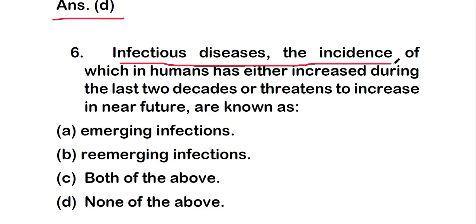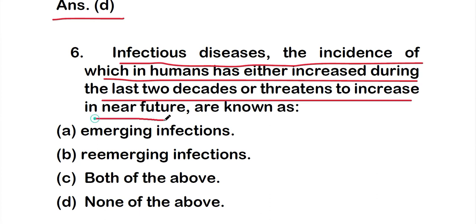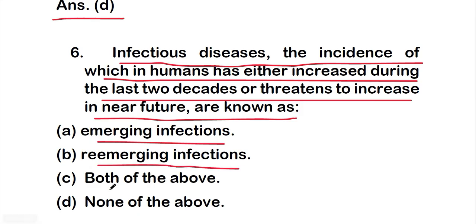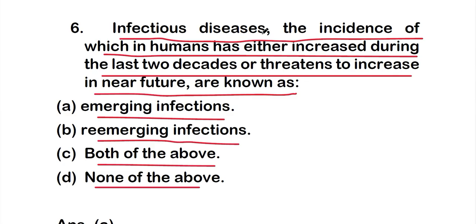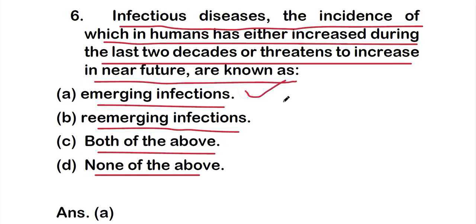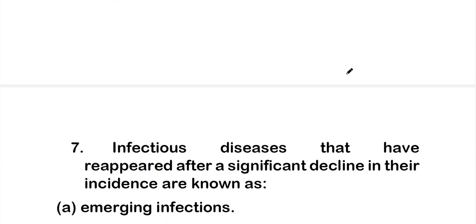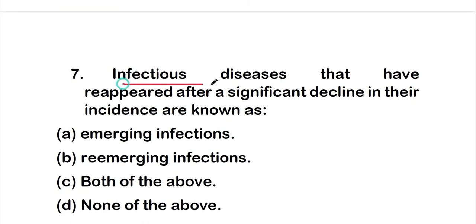Question 6: Infectious diseases the incidence of which in humans has either increased during the last two decades or is threatened to increase in the near future are also known as — option A: emerging infections; option B: re-emerging infections; option C: both; option D: none. The right answer is option A: emerging infections.